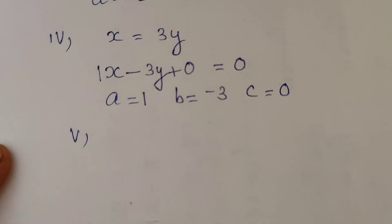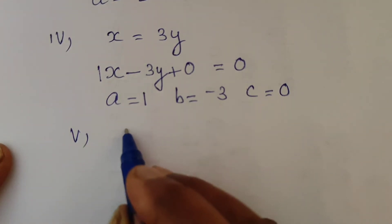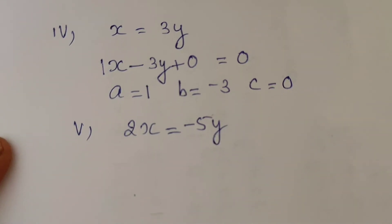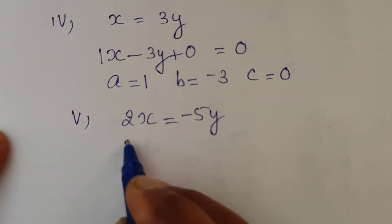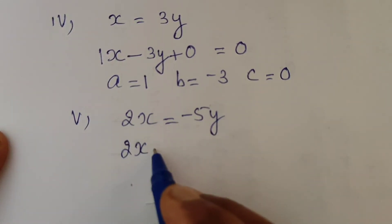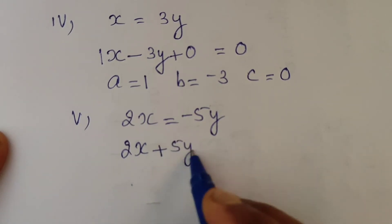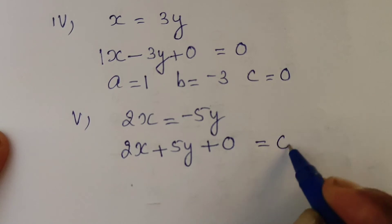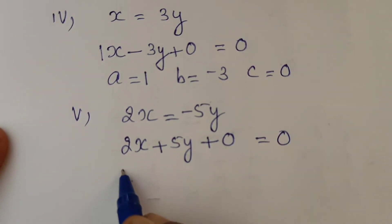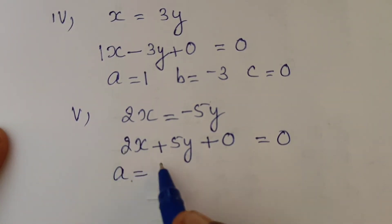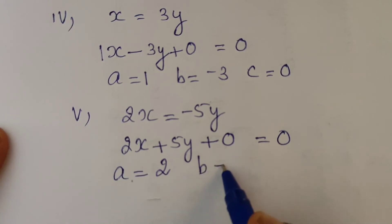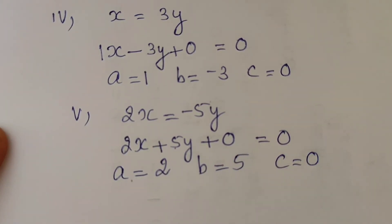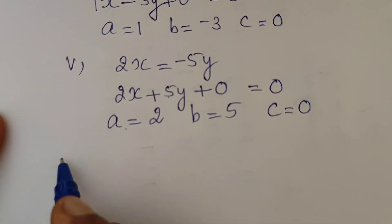Part (v): 2x equal to negative 5y. Transposing to standard form, we get 2x plus 5y plus 0 equal to 0. Therefore, a is equal to 2, which is the coefficient of x; b is equal to 5, which is the coefficient of y; and the constant term c is equal to 0.